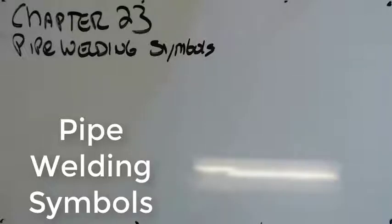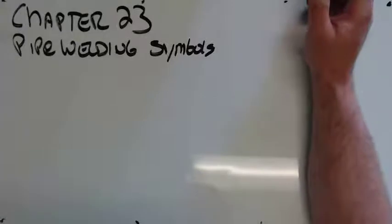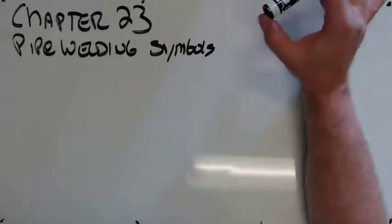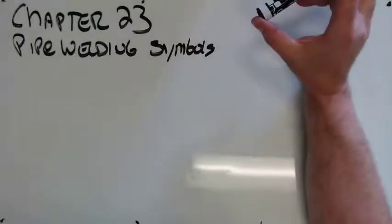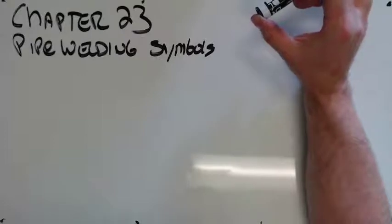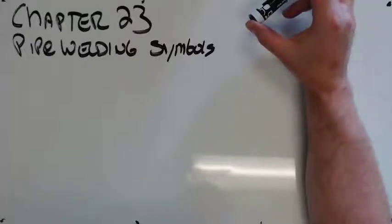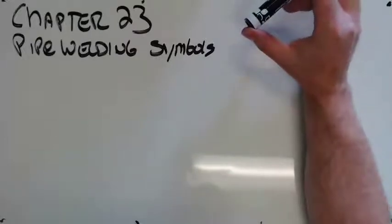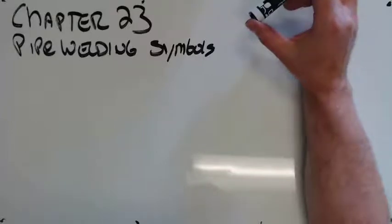Hello and welcome to Chapter 23. We're going to talk about pipe welding symbols today. So right out in the open, when the book talks about pipe welding symbols, what they're actually talking about is the symbology that the pipe world uses. Not the actual welding symbols for the pipe joints, but how they make pipe layout schematics.